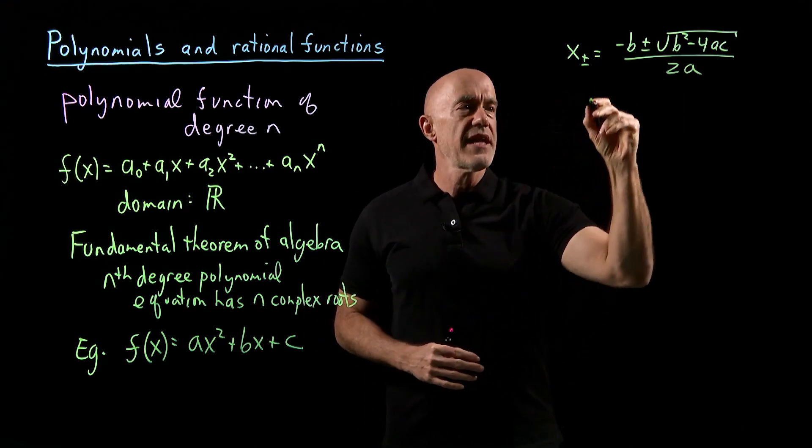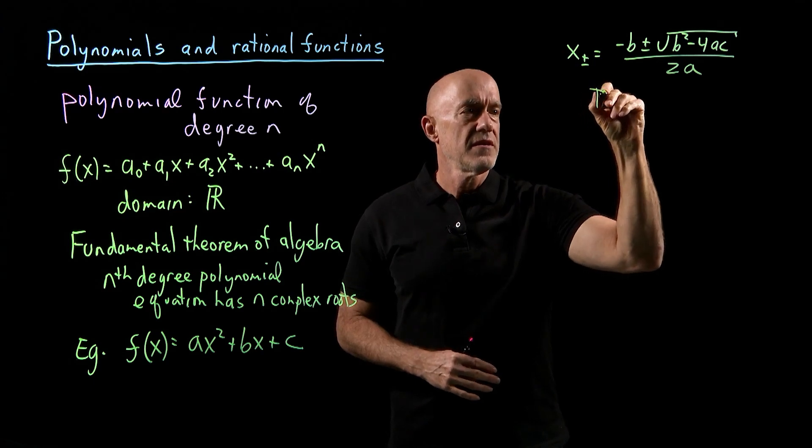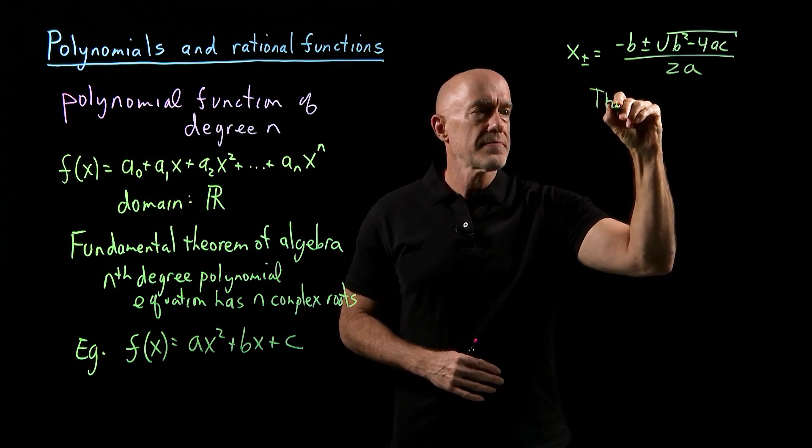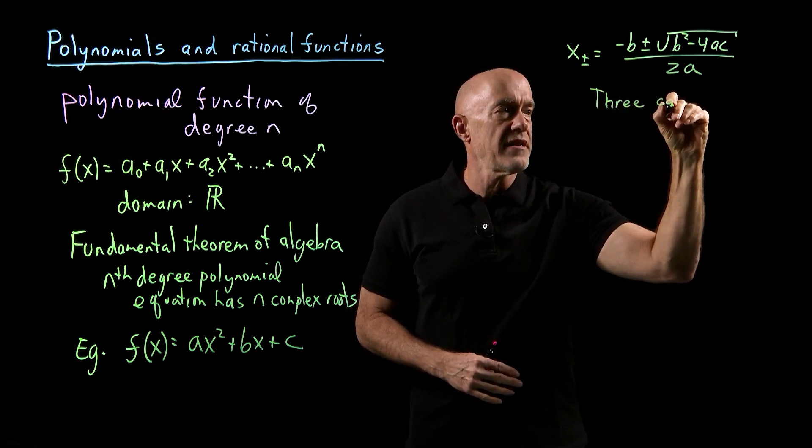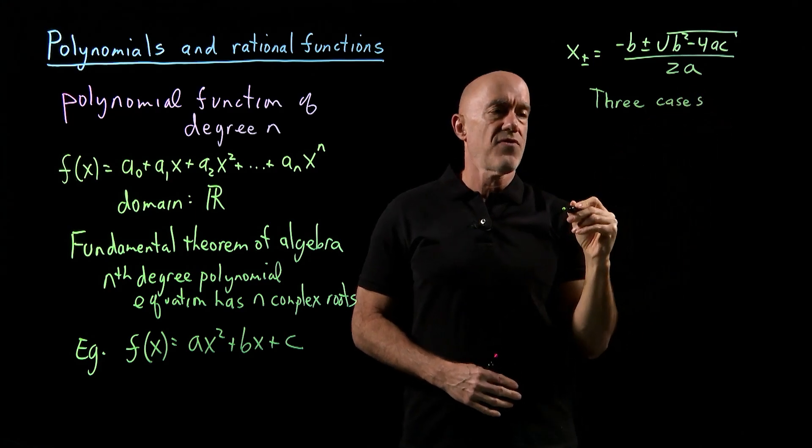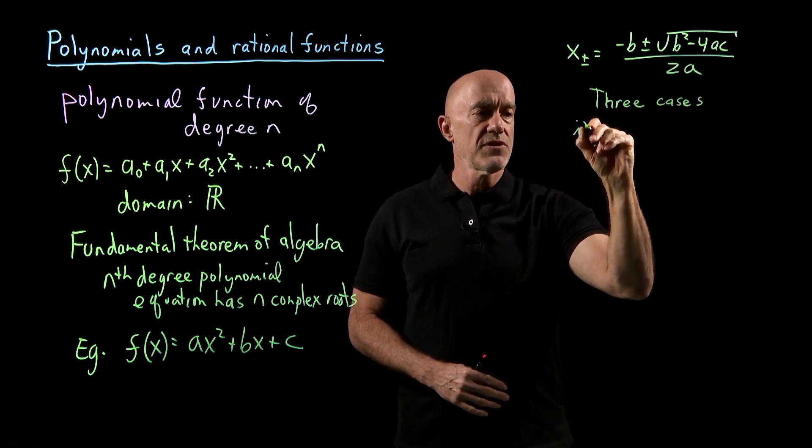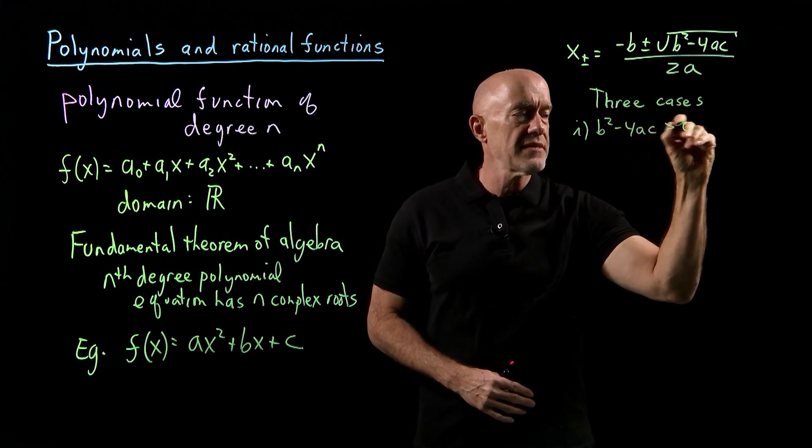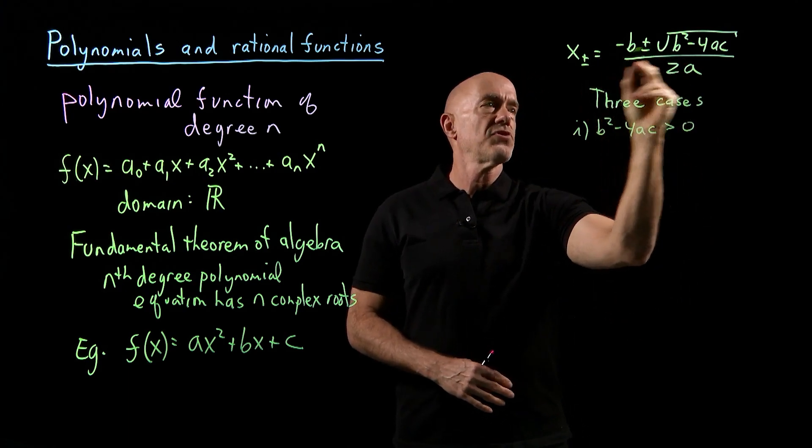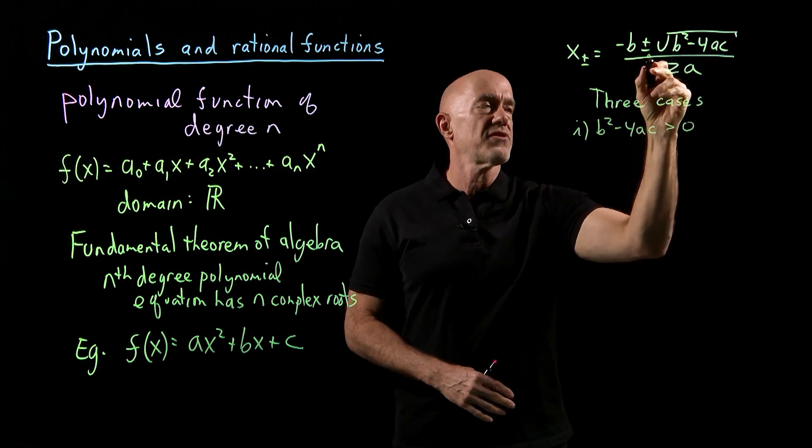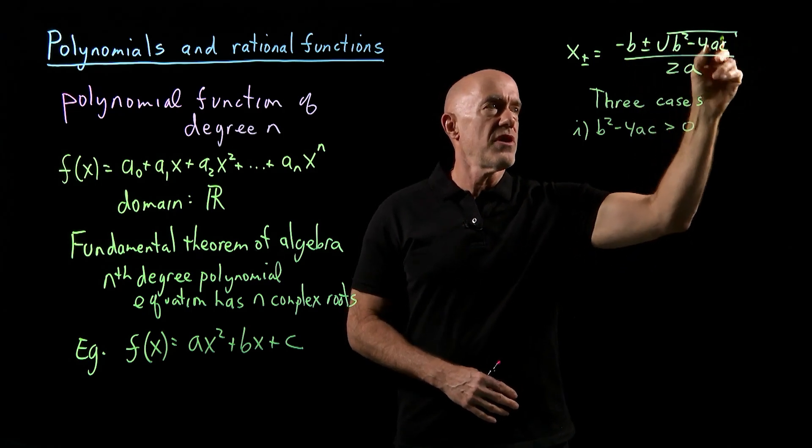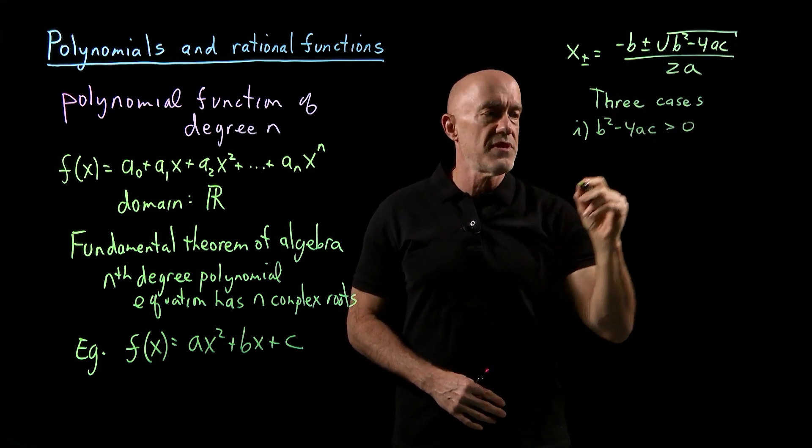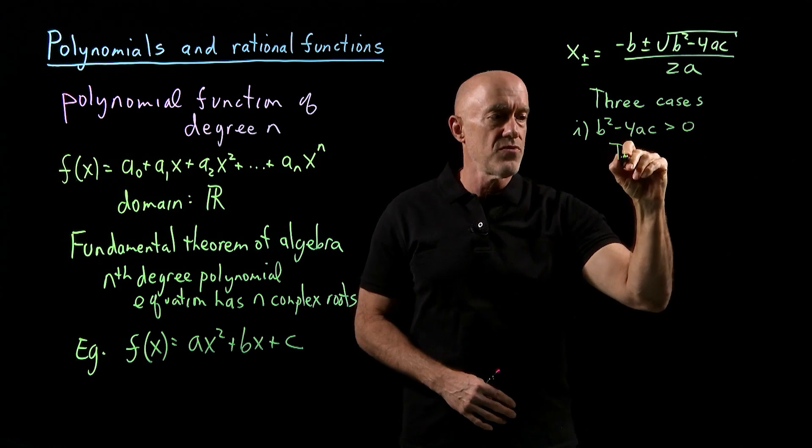There are three cases to consider here, depending on the sign of b² minus 4ac. The first case is when b² minus 4ac is positive, then we have two real roots. We have plus or minus the square root of a positive number. So this case has two real roots.